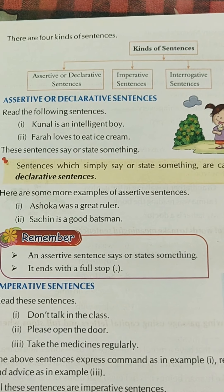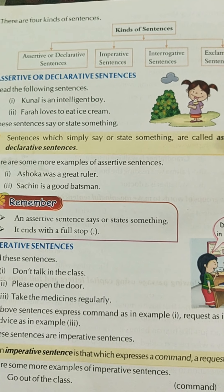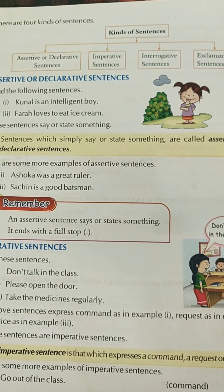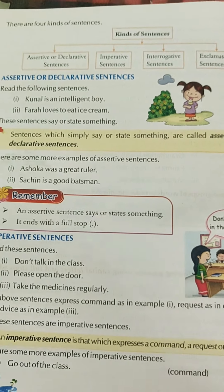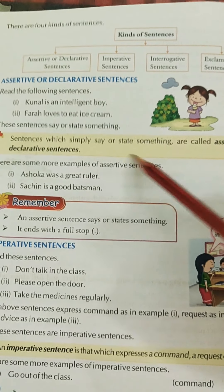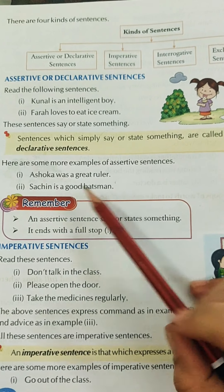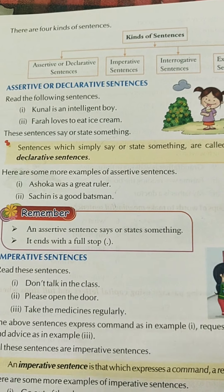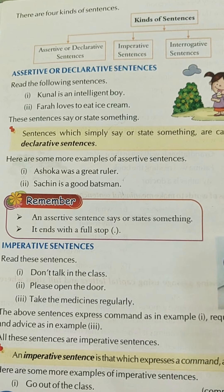The first kind is assertive or declarative sentences. These are simple sentences that state or say something — this is assertion. For example: 'Kunal is an intelligent boy,' 'Farah loves to eat ice cream,' 'Ashoka was a great ruler,' 'Sachin is a good batsman.' These are assertive sentences — they tell you something straightforwardly and always end with a full stop.